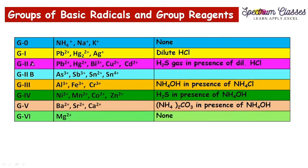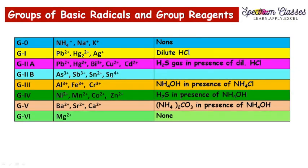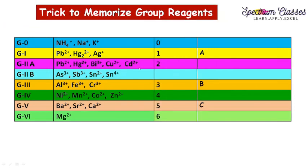The basis for distinguishing Group 2A and Group 2B: Group Two gives a black precipitate with H₂S. When ammonium sulfide is added, Group 2A precipitates are insoluble while Group 2B precipitates are soluble, which is why they are categorized separately.